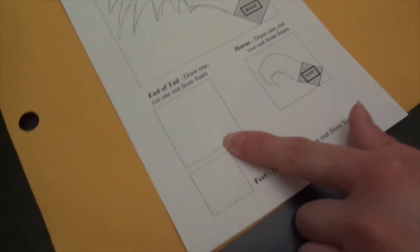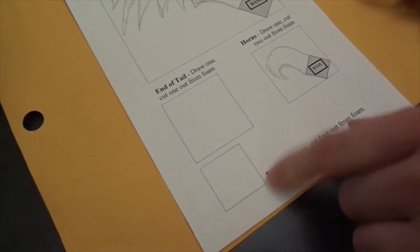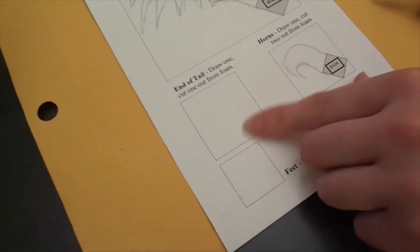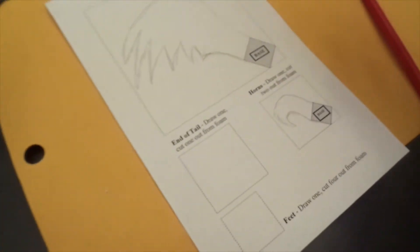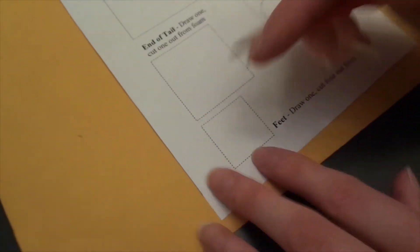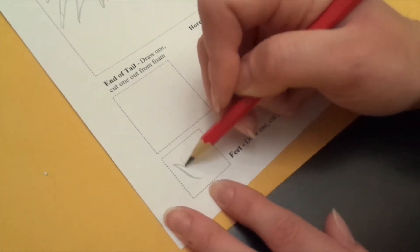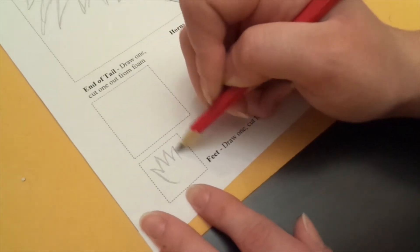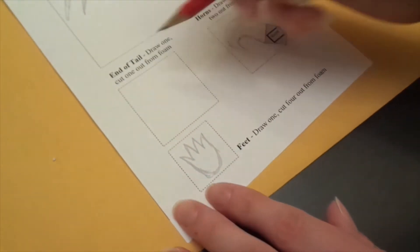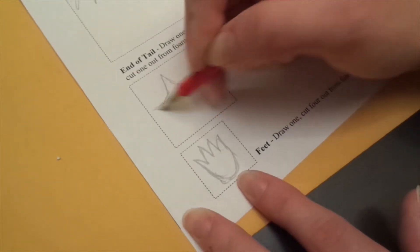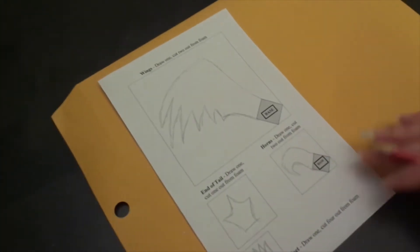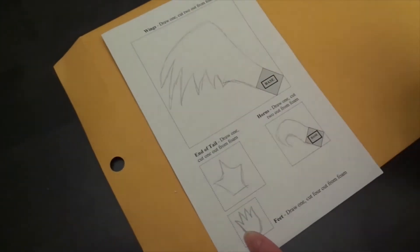And then for the end of the tail and the feet, there's no base that you have to have, but they do need to fit within the square. They don't need to be the entire square size, but they do need to fit in there and they need to be big enough to where you can stick a pipe cleaner through them to hold them on. So those are the shapes that I chose for my dragon. You can customize it however you want. I'm going to cut these out from the paper now that I'm happy with them.